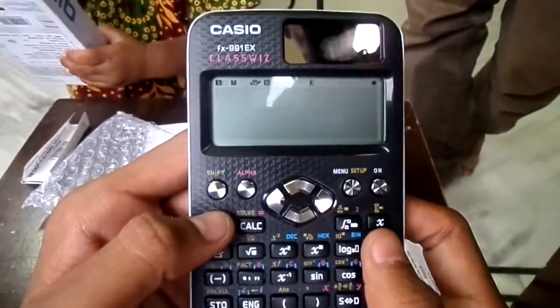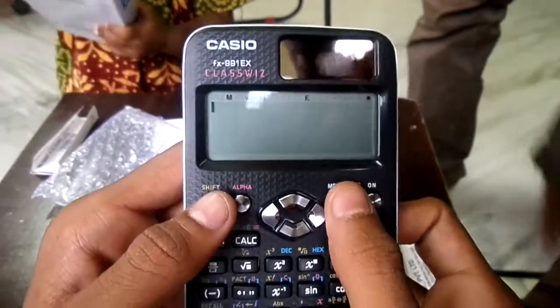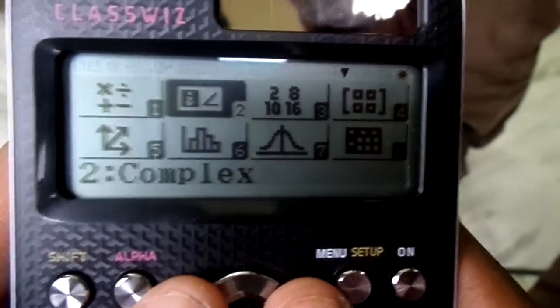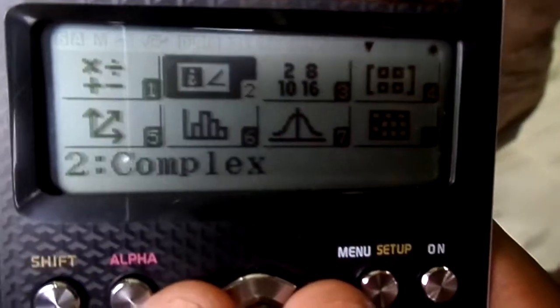The major thing in this calculator is the QR code. In this QR code we can get the graph of the calculations and we have several modes which are displayed in graphics.